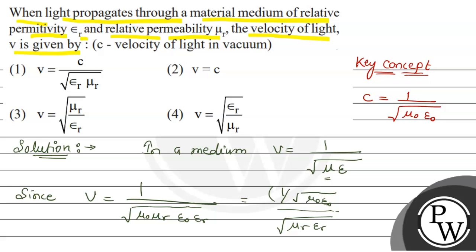So this term 1 by root of mu_0 epsilon_0 will be equal to c. Therefore, v equals c upon root of mu_r epsilon_r.